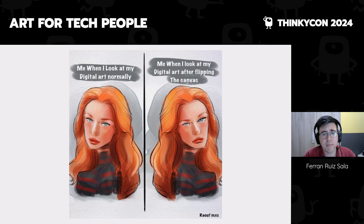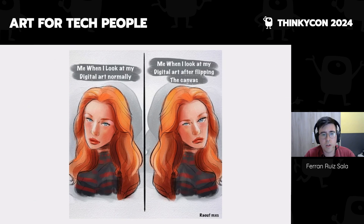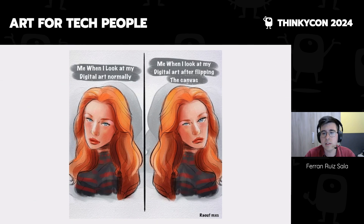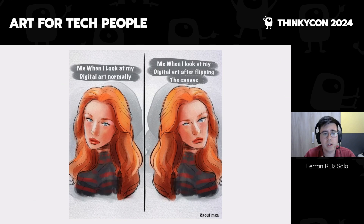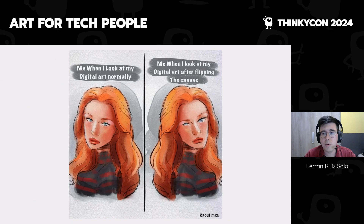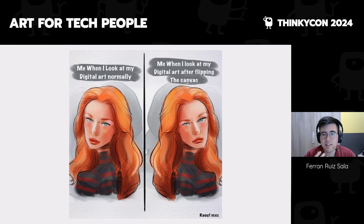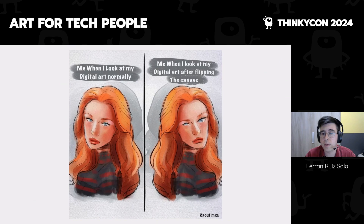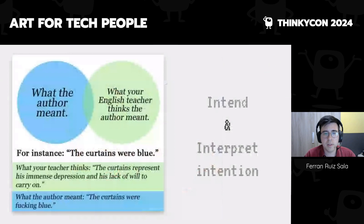There's a related trick artists use: flipping your canvas to break your familiarity with the picture and realize your anatomy is wrong. Artists love this trick because when doing art, you don't have many quick tools to test if something is working — unlike programming, where we have testing, debugging, and print statements. When artists find a little trick like this they love it. I see it as artists engaging with their art in a tech-like manner, and you can get a lot of benefit from that framework if you come from tech.